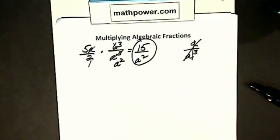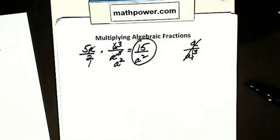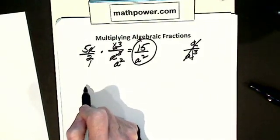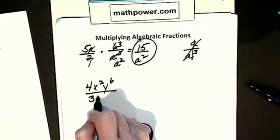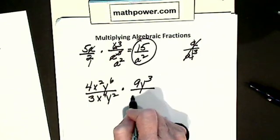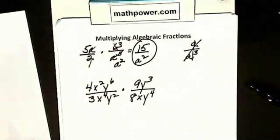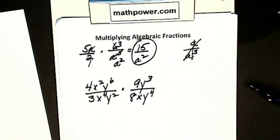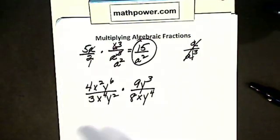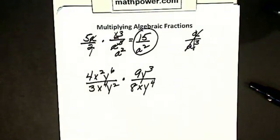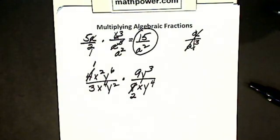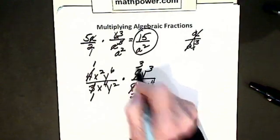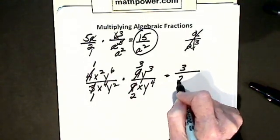Now we're going to do a bigger one. I'm going to do it two different ways, and you tell me which way you think is easiest. Let's say I have 4x squared y to the 6th divided by 3x to the 4th y squared, times 9y cubed divided by 8xy to the 4th. I'm going to do it with canceling first. I see my 4 and my 8: 4 into 4 is 1, 4 into 8 is 2. I cancel my 3 and 9: 3 into 3 is 1, 3 into 9 is 3.